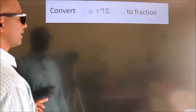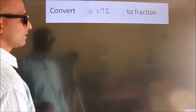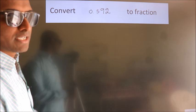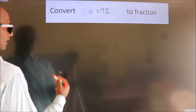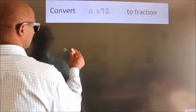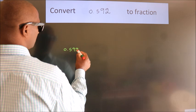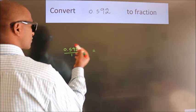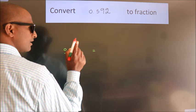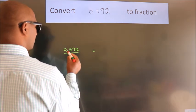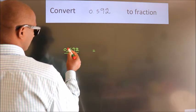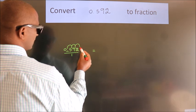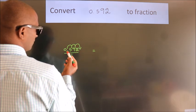Convert 0.592 to a fraction. How do we convert it? Given is 0.592. To convert this to a fraction, we have to move this decimal point one, two, three places.